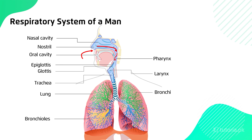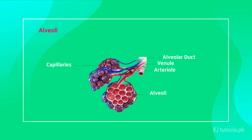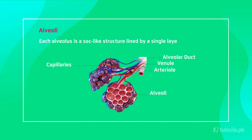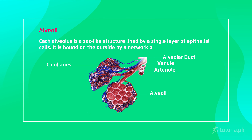The alveoli are the main structure of our lungs. Each alveolus has alveolar ducts with a rich blood supply — blood comes and goes through venules and arterioles, and capillaries surround the alveoli. Each alveolus is a sac-like structure lined by a single layer of epithelial cells, bound on the outside by a network of capillaries. The left lung has two lobes — the superior and inferior lobes. The right lung has three lobes — the superior, middle, and inferior lobes.